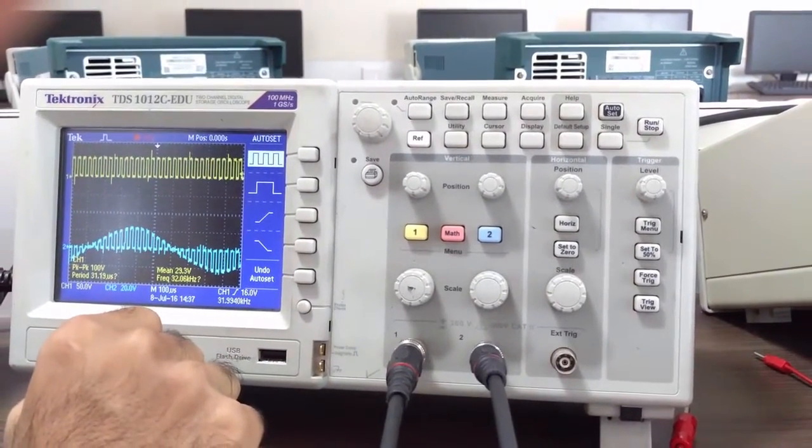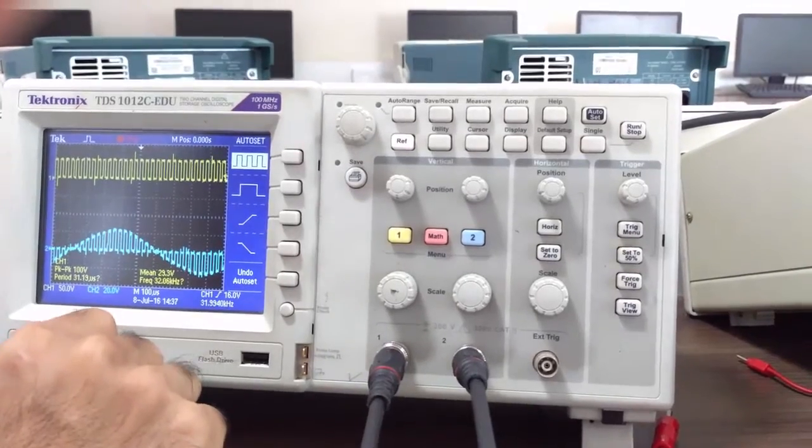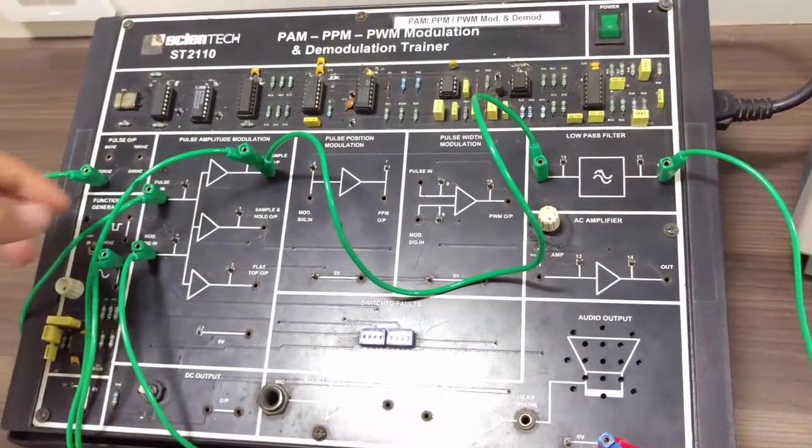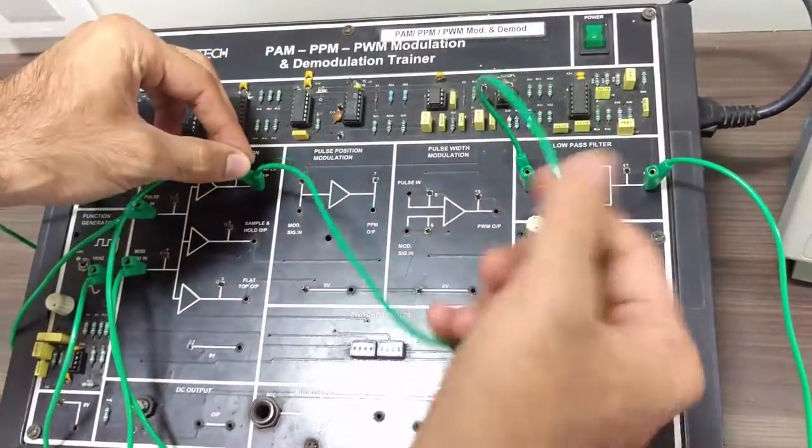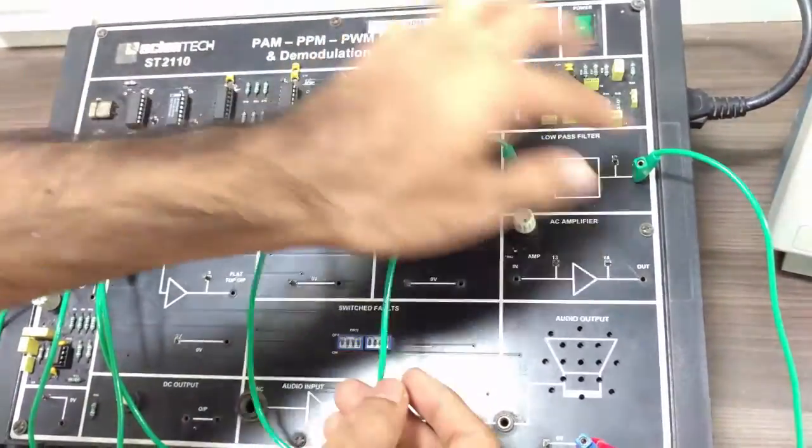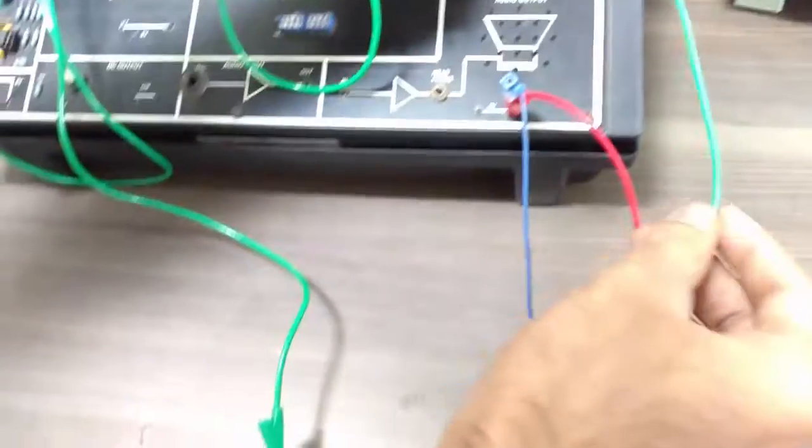So now let us see the demodulation for PAM. For demodulation we have to connect the sample output as input to the low pass filter and check the demodulated output at the output of low pass filter.